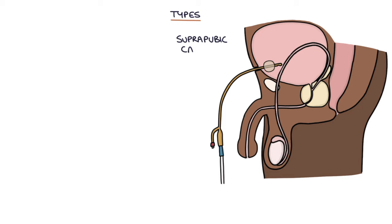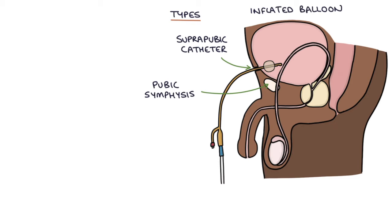Suprapubic catheters are inserted directly through the abdomen into the bladder, just above the pubic symphysis in the suprapubic area. Local anesthetic is used to numb the area before insertion. An inflated balloon holds the suprapubic catheter in place in the same way as a urethral catheter, and when used long-term they can be easily replaced at regular intervals by an appropriately trained person.